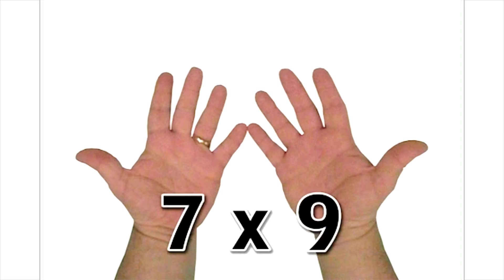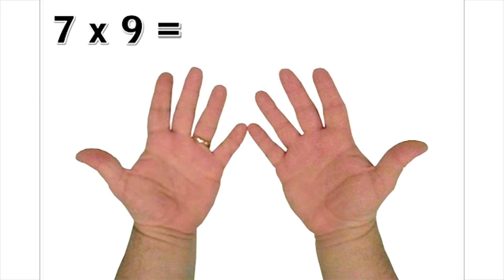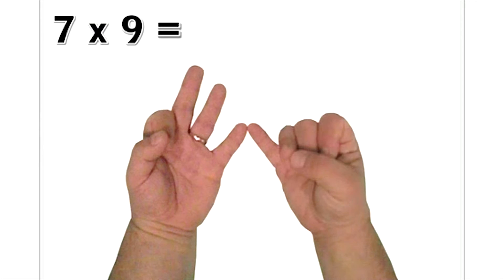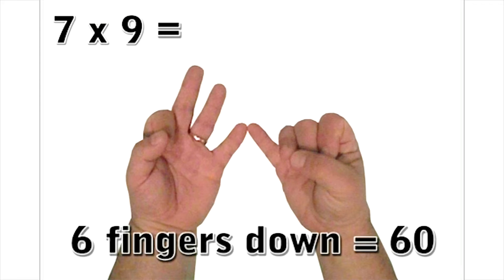Say you want to multiply 7 by 9. On your left hand, put down all your fingers up to and including 7. On your right hand, put down all your fingers up to and including 9. Now, any fingers that are down, each count as 10. We have 6 fingers down, so that's a total of 60.